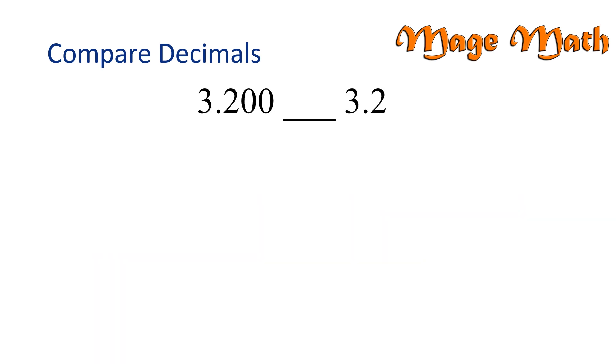Compare the decimals 3 and 200 thousandths to 3 and 2 tenths. We want to determine which one is greater than, less than, or equal to. Once again, our whole numbers are equal, so we only need to focus on the decimal parts.